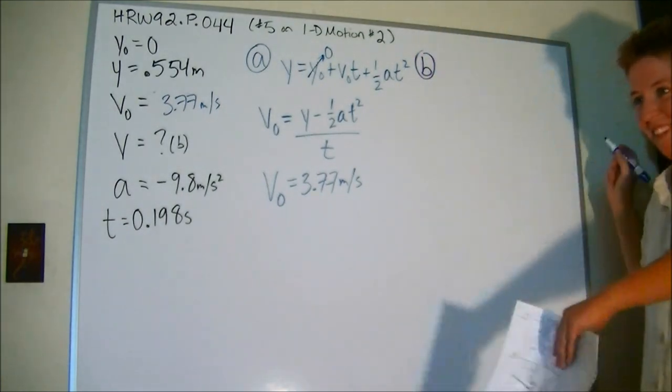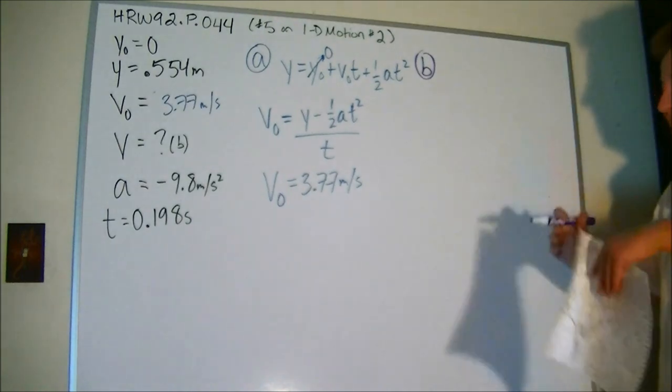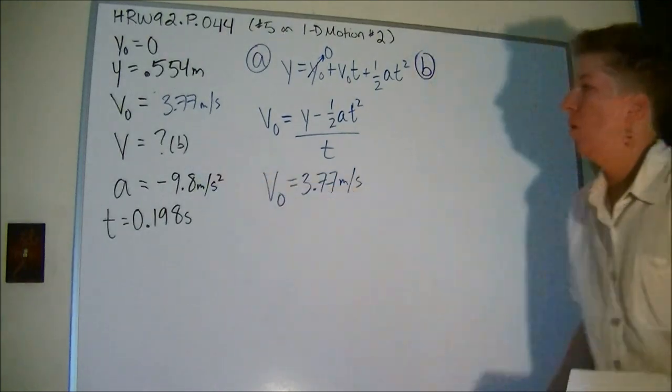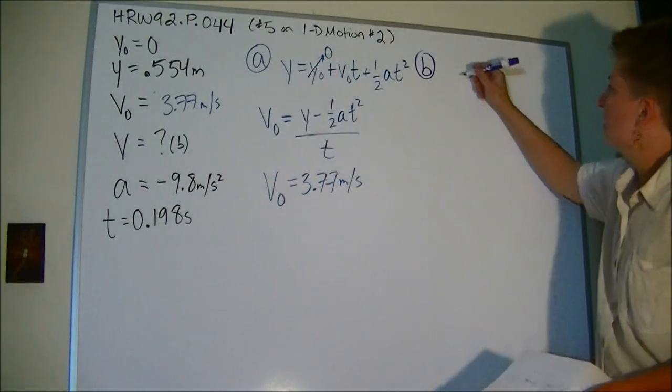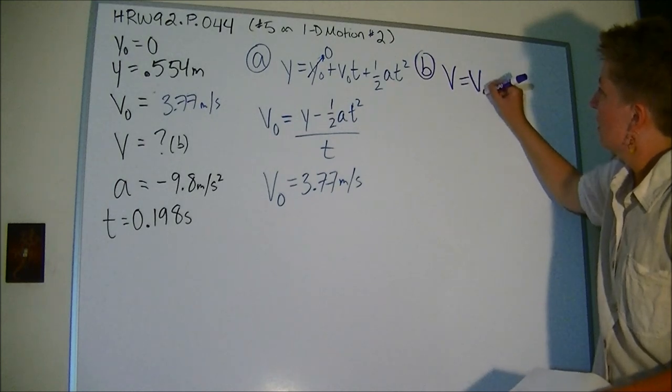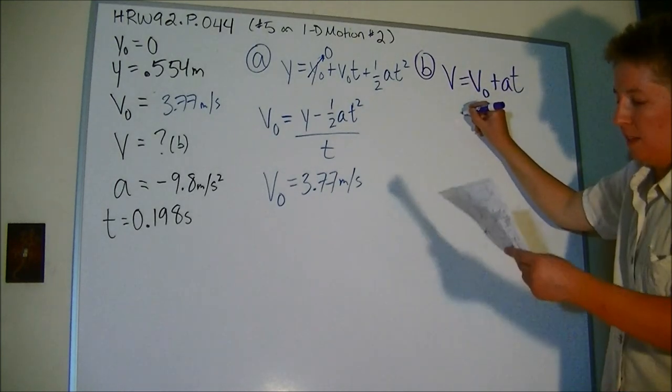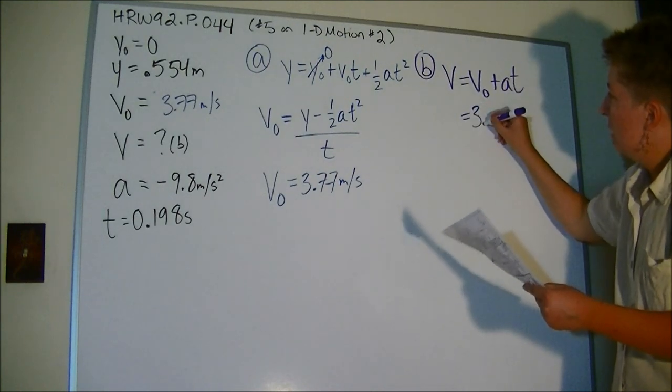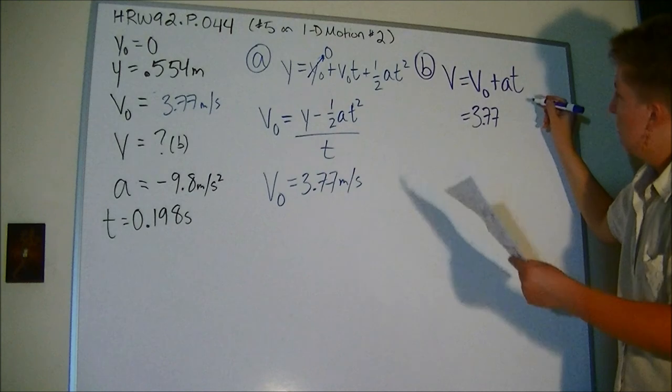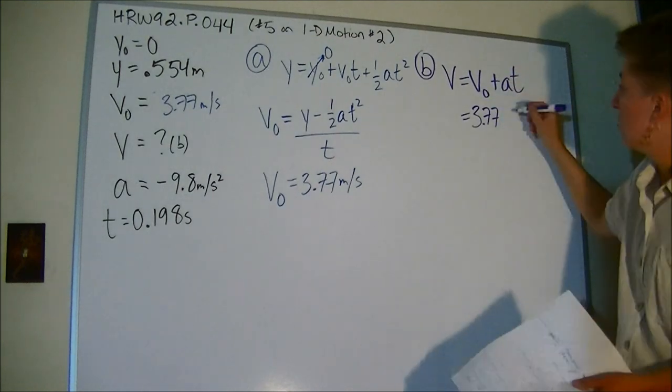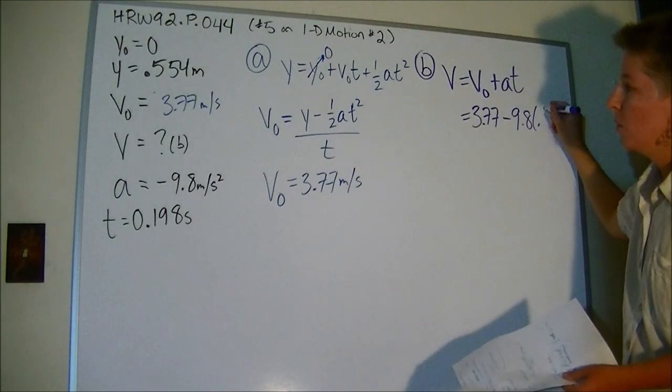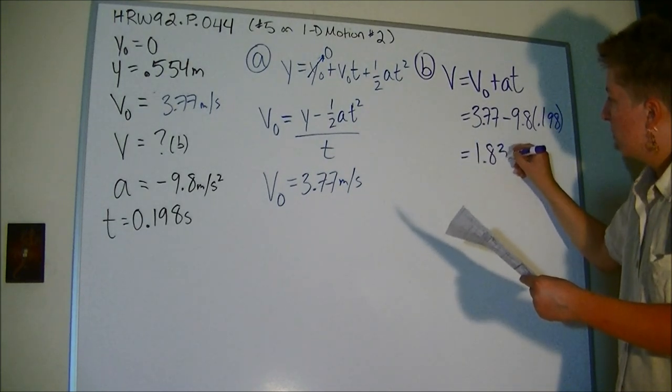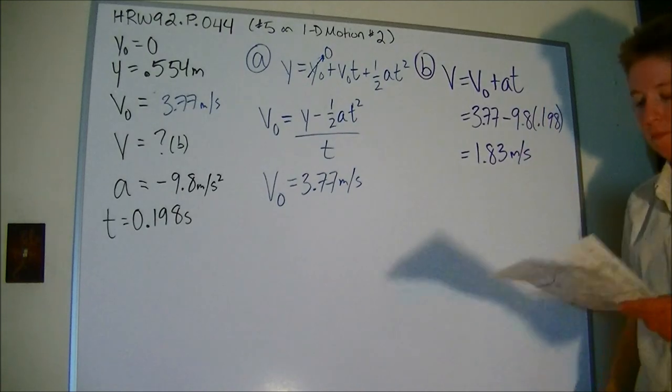So this one I'm looking for V. Well, luckily I know V naught, so I can use this equation because it's the nice easy one. V equals V naught plus at. I just found V naught so I can just plug it in. Notice a is a negative number, so it's going to be minus 9.8 times 0.198, and I end up with 1.83 meters per second.